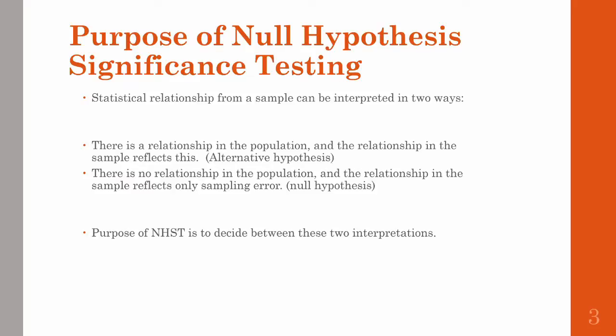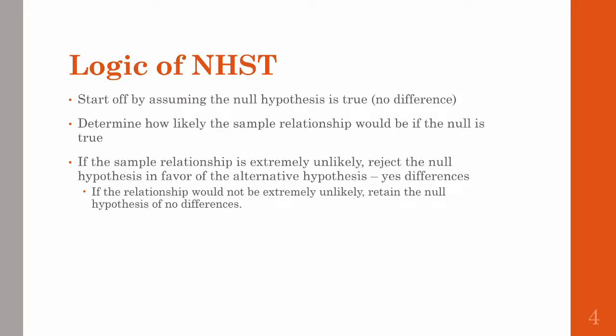So with NHST, you have to look at your data and decide between these two interpretations. The steps for NHST start with always assuming that the null hypothesis is true — so you start with the assumption that there are no differences. Then from the data, you determine how likely the sample relationship would be if the null hypothesis were true. If it's extremely unlikely that you found this relationship under the assumption that the null is true, then you reject the null hypothesis in favor of the alternative hypothesis.